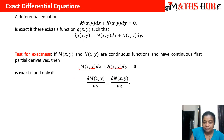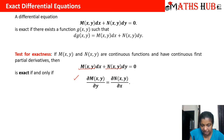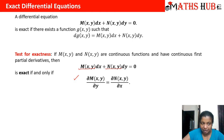The test for exactness is to calculate the partial derivative of M with respect to y, and the partial derivative of N with respect to x. If both are equal — that is, ∂M/∂y equals ∂N/∂x — then we say that the equation is exact.